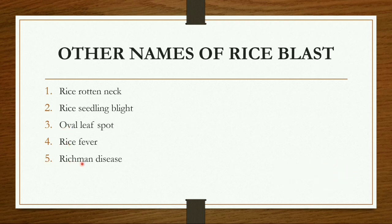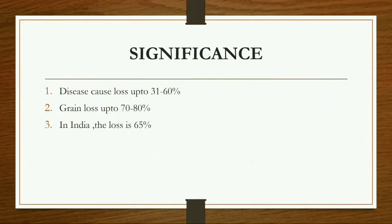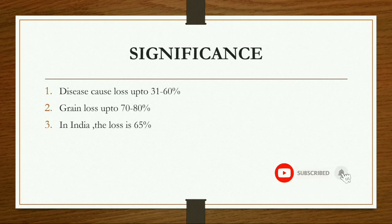The blast disease has significant disadvantages to the crop. The disease causes losses of up to 31 to 60 percent grain loss, and up to 70 to 80 percent in some cases. In India, the loss due to blast disease in rice is 65 percent.